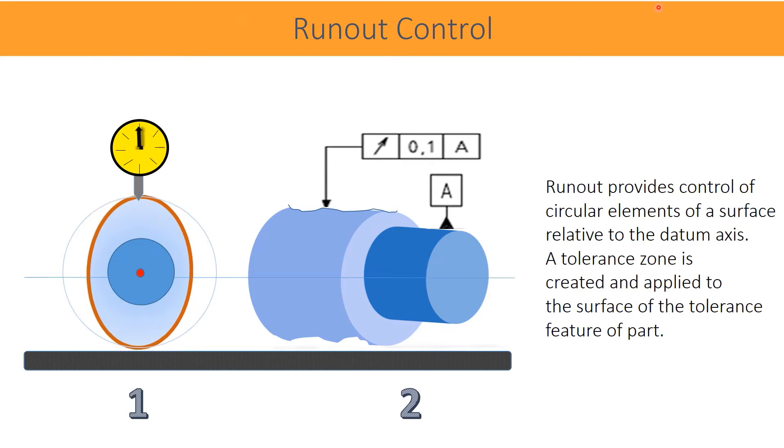Runout provides control of circular elements of a surface relative to the datum axis. A tolerance zone is created and applied to the surfaces of the tolerance feature of the part. In this drawing, the smaller diameter is treated as datum A, whereas the larger diameter is the feature whose axis is controlled for runout.